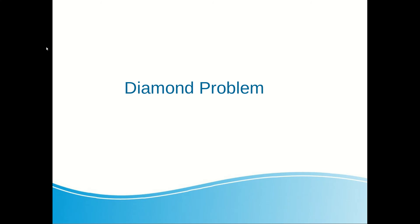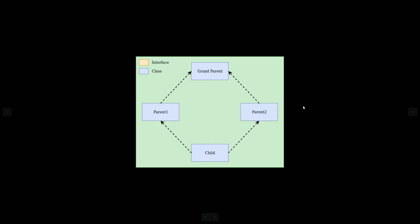So what's the diamond problem? If you look at this diagram, you can see there are four classes: grandparent, parent1, parent2, and child respectively. Parent1 and parent2 inherit from grandparent, and child inherits both parent1 and parent2.